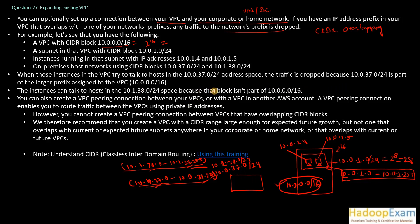However, the instances can talk to hosts in the 10.1.38.0/24 space because that block is not part of the VPC's 10.0.0.0/16 range — it is a different CIDR range entirely. The 10.0.37.0/24 falls under the VPC's range due to the overlapping, so traffic to it is dropped. Any overlapping CIDR block would result in dropped traffic.